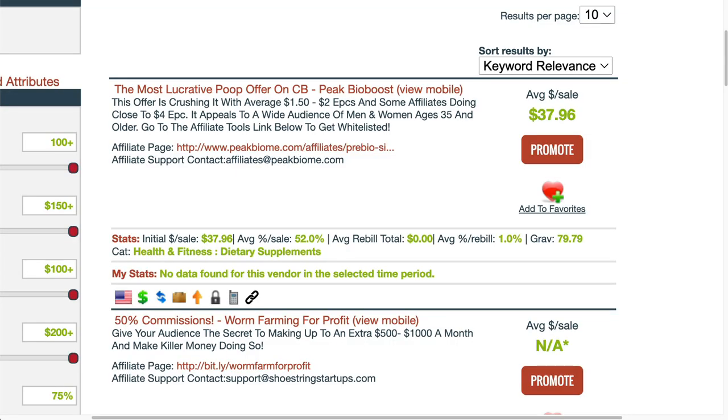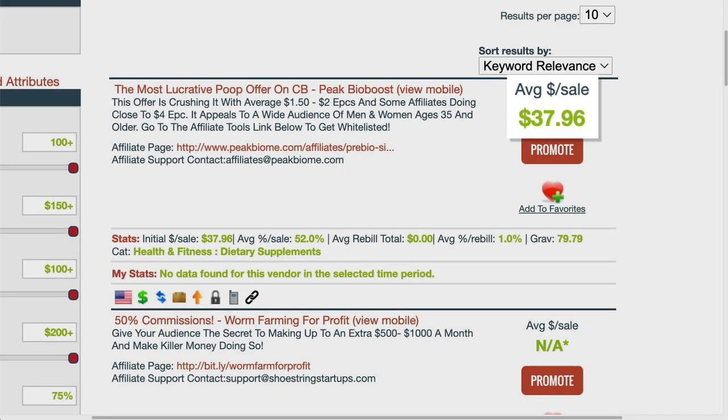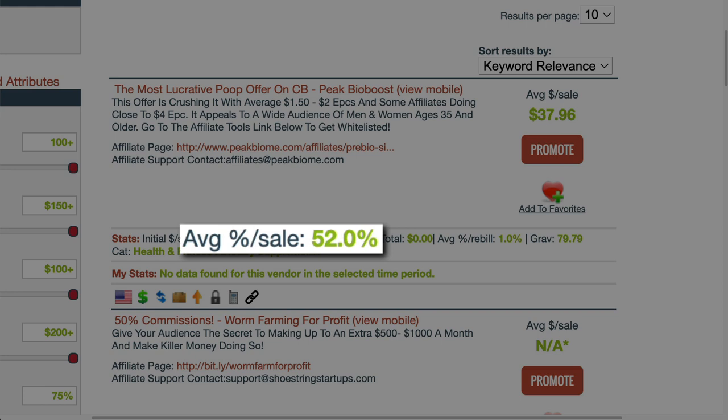Clickbank provides affiliates with some very useful numbers. The most important for an affiliate is this big number in green: the dollar per sale. This is the average amount Clickbank is currently paying affiliates every time a poor, constipated soul gets sucked into buying the poopy pills. I love to say poopy pills. Then the next number that matters is the average percentage per sale, which is the commission rate, in this case 52%.